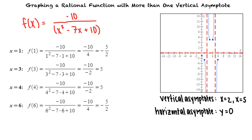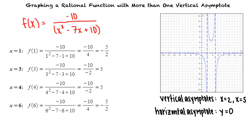Plotting these points, we can graph the function f of x equals negative 10 over x squared minus 7x plus 10. To graph a rational function, we identify vertical asymptotes by finding the zeros of the denominator. We then identify horizontal asymptotes by comparing the degree of the numerator to the degree of the denominator. We can then find the x and y-intercepts if they exist, as well as one point on each side of the vertical asymptotes.